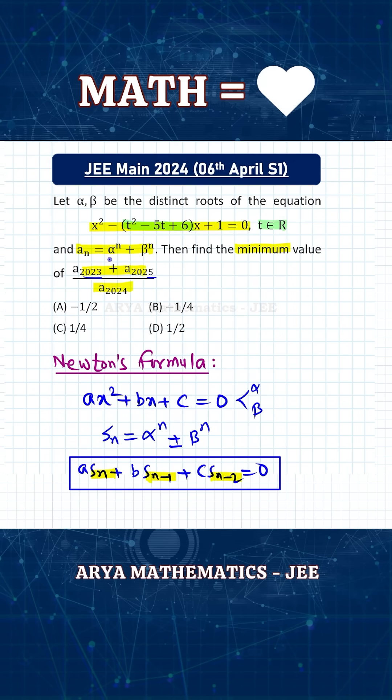You can see that a_n, this is alpha raised to n plus beta raised to n. So then using Newton's formula, let us call this expression as f of t.